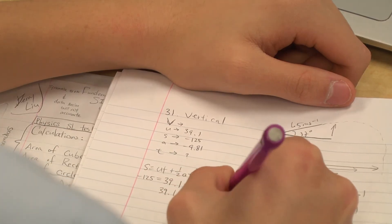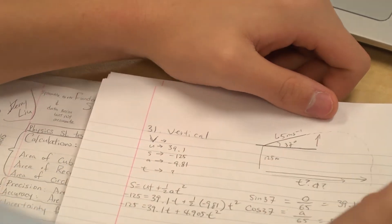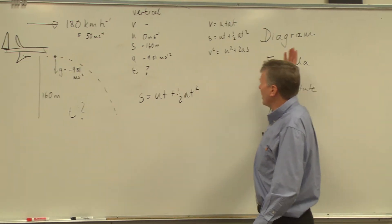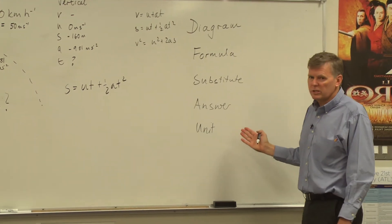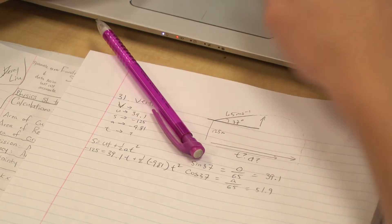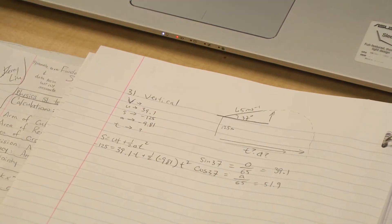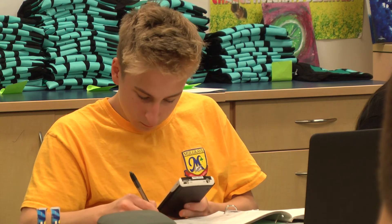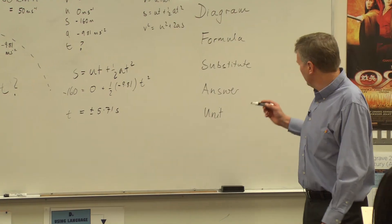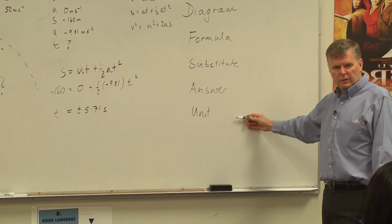What's the next step? Find the right formula. So S equals UT plus a half AT squared. We're going back to our process to solve a problem — we've drawn a diagram, we've used the formula, and now we are going to substitute numbers into the formula. Have we got an answer? Have we got units?